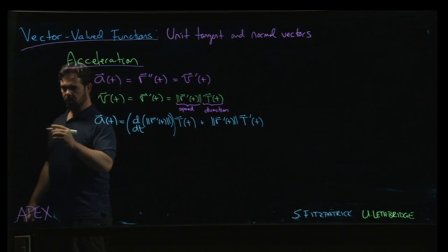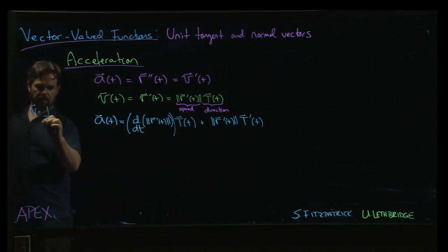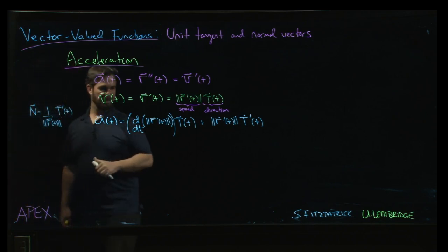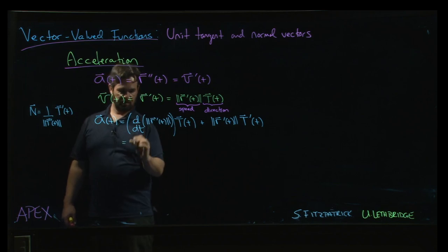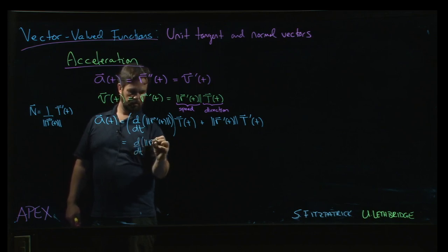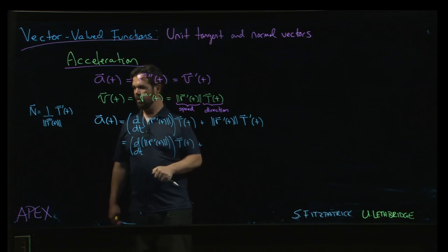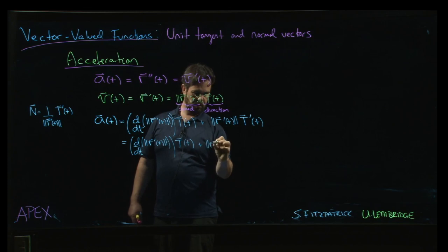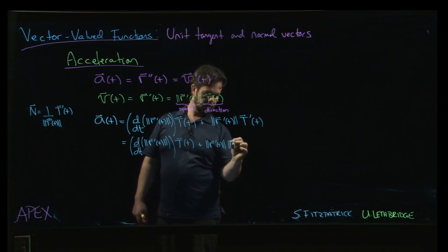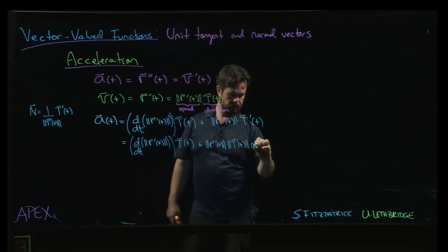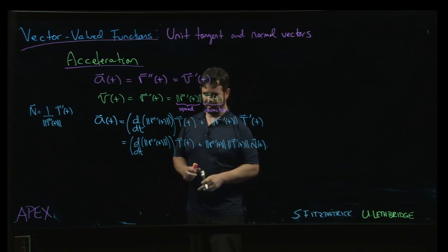Oh, but also remember that our normal vector is 1 over the magnitude of t prime times t prime. So I can write this. So I can write this as, well, I don't really have a good notation for this, so I'm just going to leave it as the derivative of the magnitude of r prime times the unit tangent vector, and then I've got the magnitude of r prime times the magnitude of t prime times the unit normal vector.